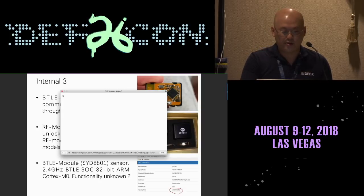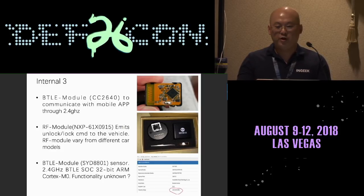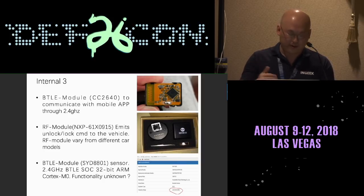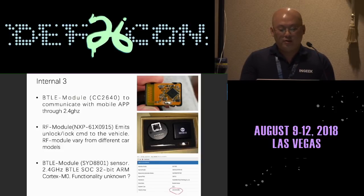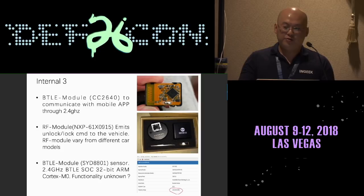The RF module is different for different car models. If you've done RF hacking you know the first thing to look for is an FCC ID. Since Army Key is dedicated to the Chinese market, they use a similar system called CMIT ID — equivalent to FCC ID — and by searching the database we can find more device details. There is also a small square sensor beside the main board with chip type SYD8801, whose functionality is unknown.